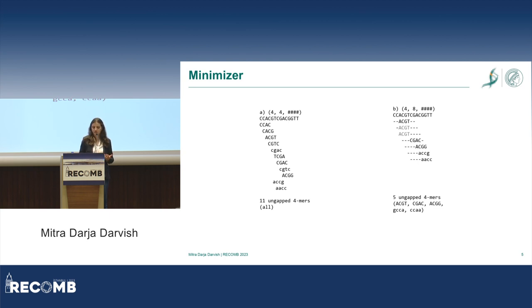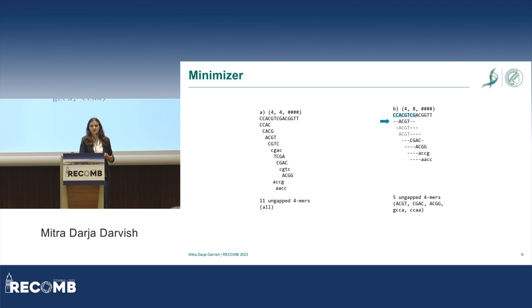In some cases, the minimizer doesn't change as the window moves, so we store this minimizer only once. Compared to using all k-mers, we store fewer values, which is the key efficiency gain of minimizers.